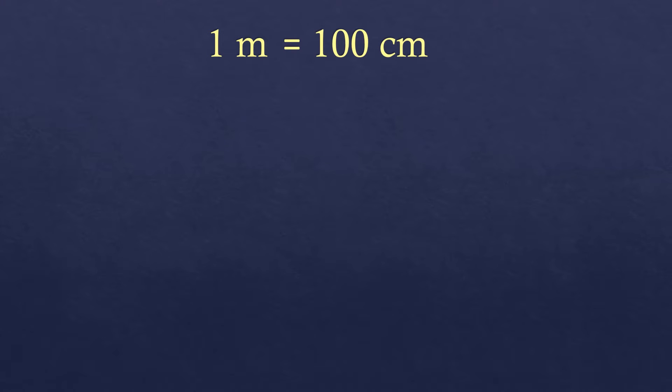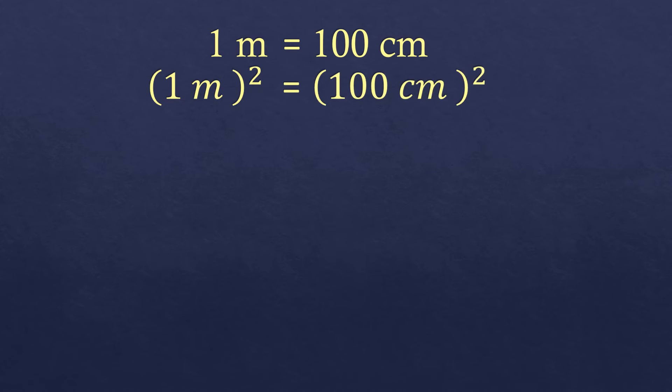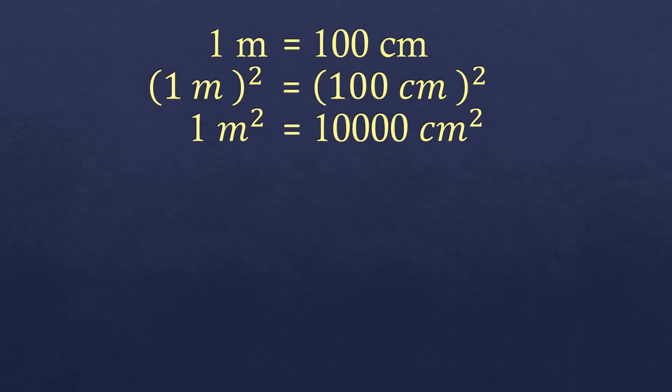But before that, let's review the conversion from meter to centimeter. One meter is equal to 100 centimeters. Now if you are going to square these two, you will arrive at 1 meter times 1 meter — that's the concept of squaring, you multiply it by itself. So 1 meter times 1 meter is 1 square meter, and 100 centimeters times 100 centimeters becomes 10,000 square centimeters.